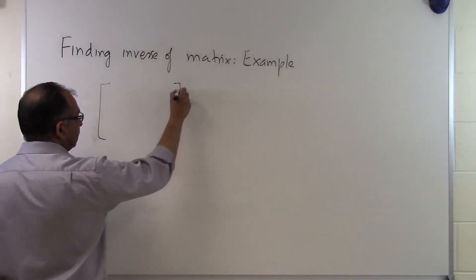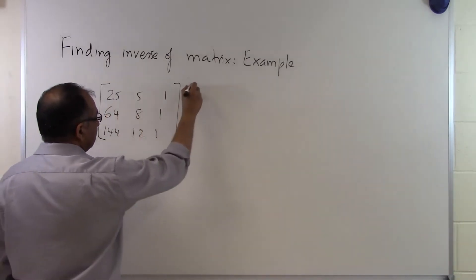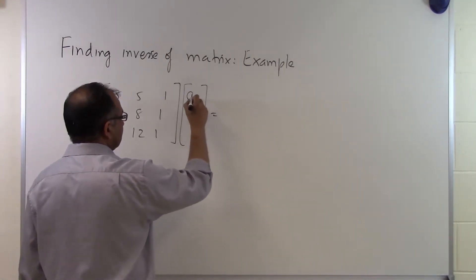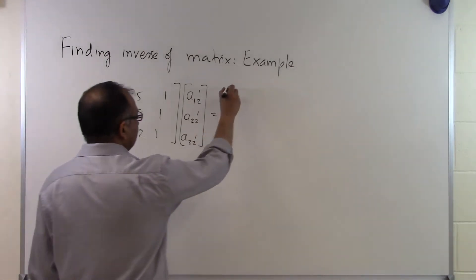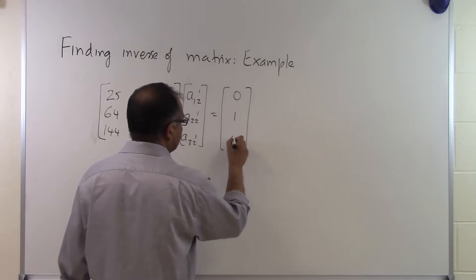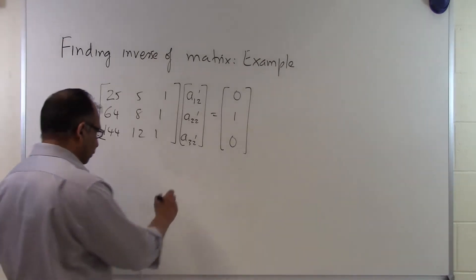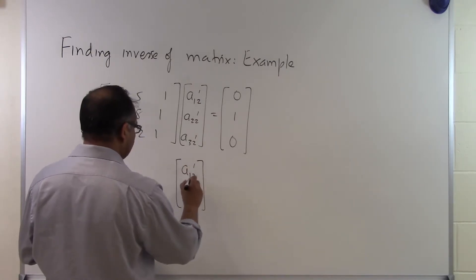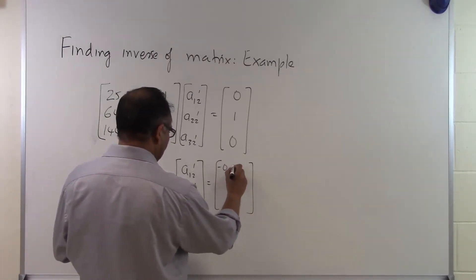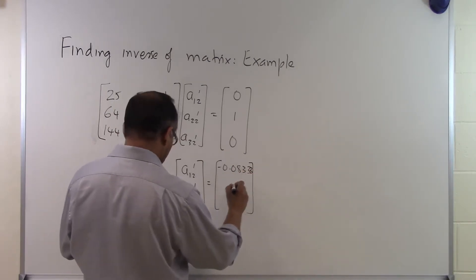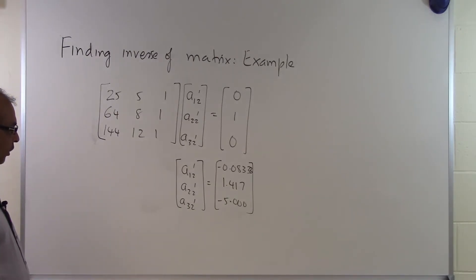Now we are going to find out the second column of the inverse of the matrix. We have 25, 5, 1; 64, 8, 1; 144, 12, 1, and I am going to put the second column of the inverse matrix here: A12', A22', and A32'. That will be equal to the right-hand side, which is 0, 1, 0 — the second column of the identity matrix. Solving these three equations and three unknowns, we get minus 0.0833, 1.417, and minus 5.000 as the second column of the inverse matrix.